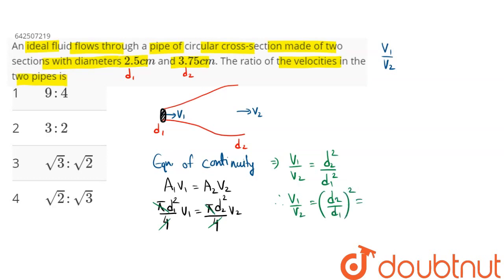Now D2 is given in the question as 3.75 cm and D1 is given as 2.5 cm, whole square. Now 3.75 is 15 by 4 divided by 5 by 2 whole square.